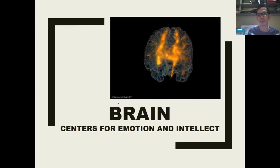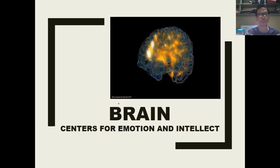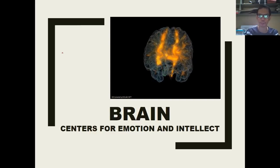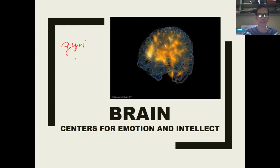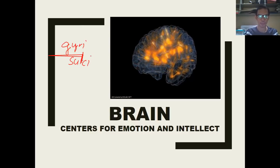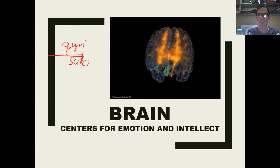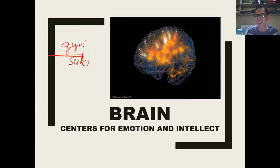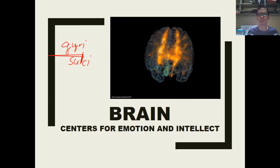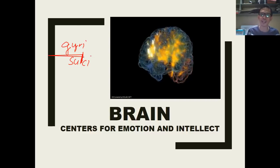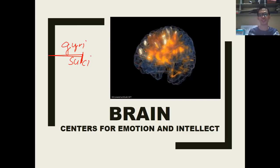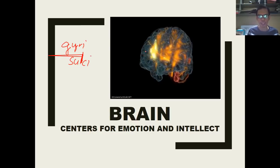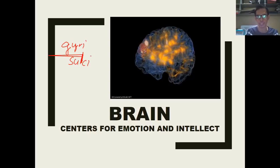The brain is the center for emotion and intellect. That's the reason why your brain is made up of several lobes — the gyri and the sulci, which are fissures found in your brain. These particular lobes have certain functions for emotion, judgment, talking, singing, hearing, vision, and other activities. Any emotional or intellectual function of our body comes down to the function of the lobes of your brain.